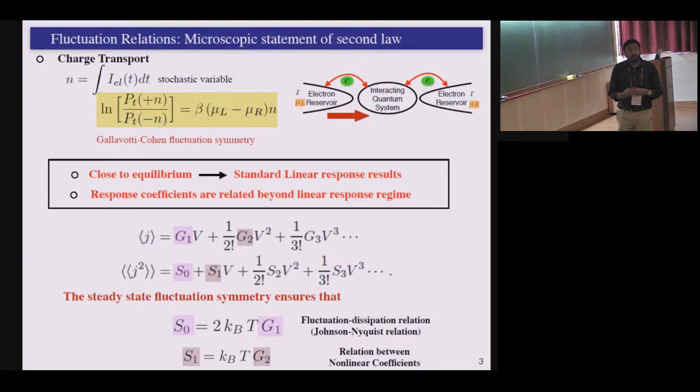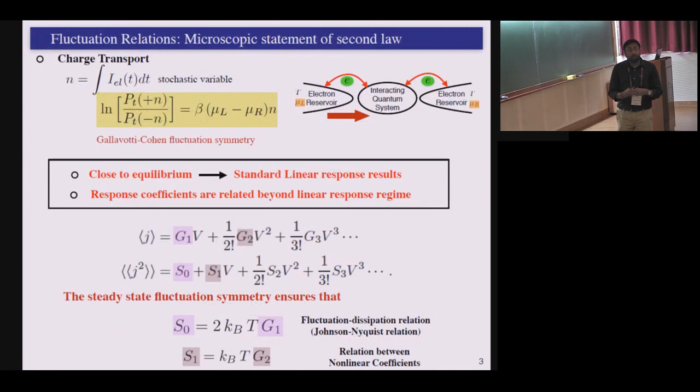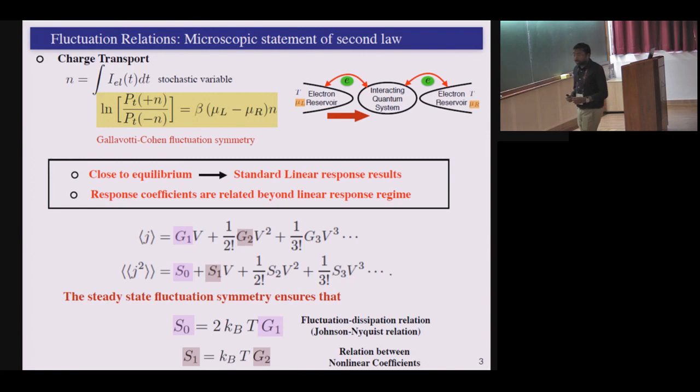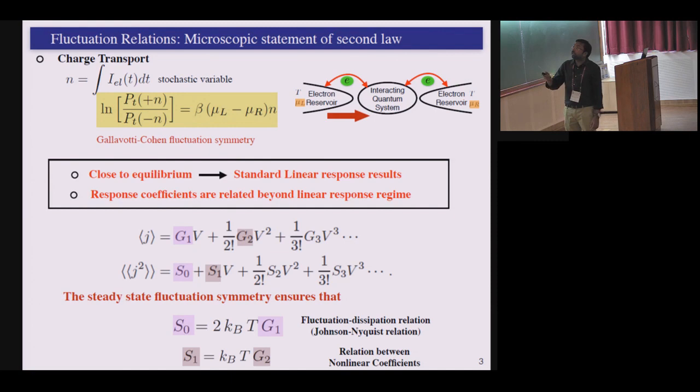And that question was answered also. But before getting there, I mean, what people actually found out was that if you start looking at, you know, we are talking about average current or basically looking at the current and its all moments. So what you can, in general, talk about the underlying distribution of current. And when you start looking at the underlying distribution of current, you start seeing certain forms of so-called universal relations, what is now famously called as fluctuation relations. So here I have written one of this fluctuation relation, which basically tells you